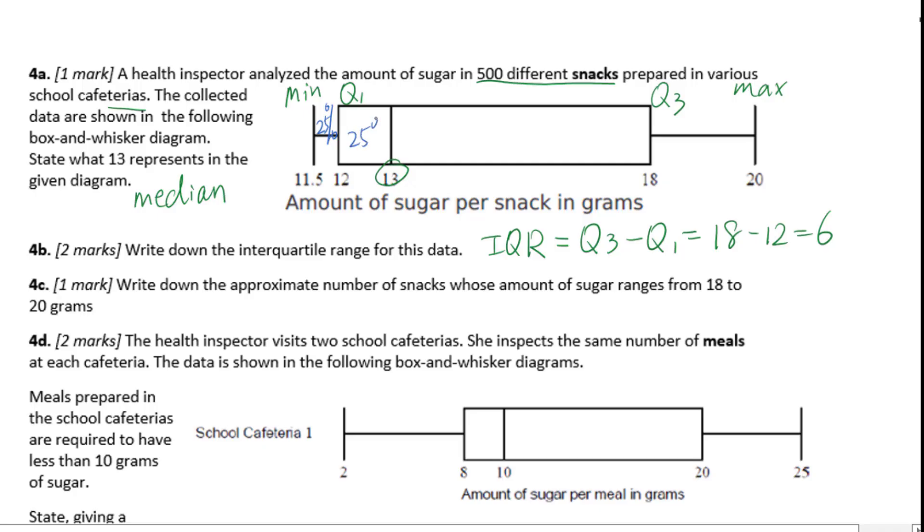This is 25%, 25%. So from 18 to 20, it will be 25% times 500. That equals 125 snacks.